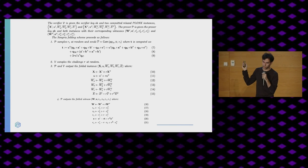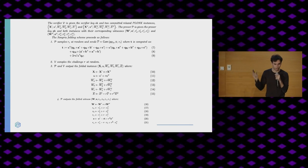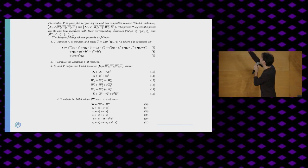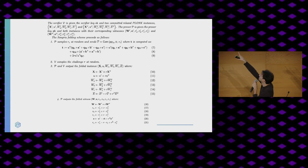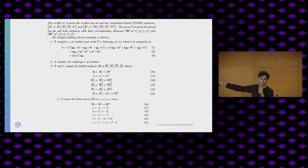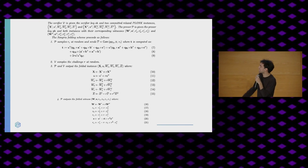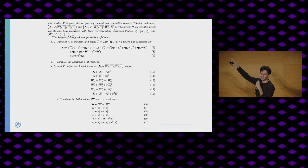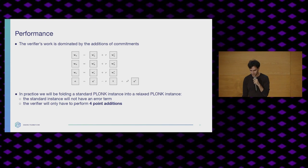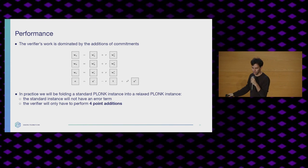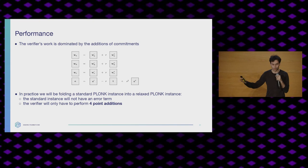This is actually what it looks like on paper — it's pretty ugly. You can see T there; that's why I've not been showing it. The prover also works with random values because we are using hiding commitments. Check out the PDF if you're interested in the full details.